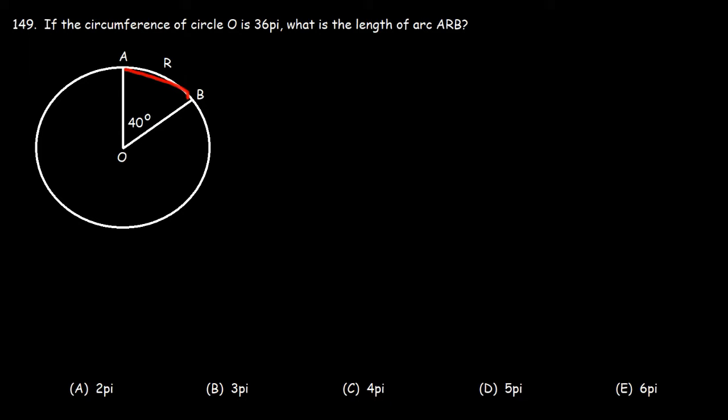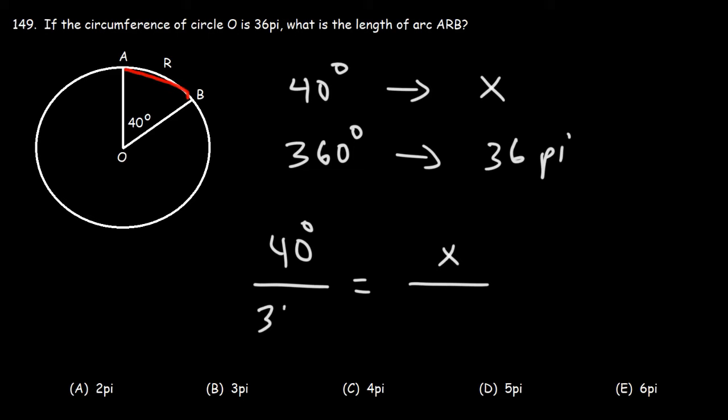Now you can set up a proportion if you want to. So we're trying to find the arc that corresponds to an angle of 40, let's call this x. The arc that corresponds to an angle of 360, that's the entire circle, the circumference, which is 36 pi. So we can set up a proportion. We can say 40 is to x as 360 is to 36 pi.